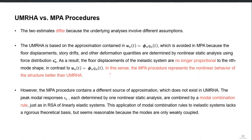The MPA and UMRHA procedures differ because the underlying analyses involve different assumptions. The UMRHA procedure is based on the idea that we can approximately assume the mode shapes as uncoupled, using the same mode shapes φ_n which are the mode shapes of the corresponding linear single degree of freedom system. This means that the modal contributions in UMRHA will always be proportional to the original mode shapes of the corresponding linear system.